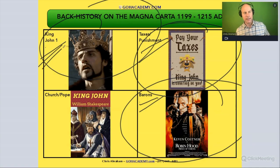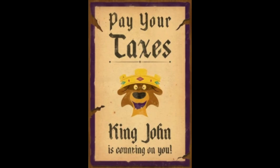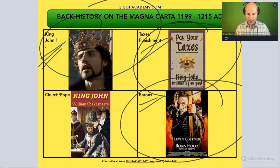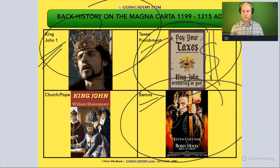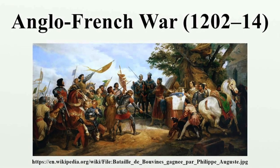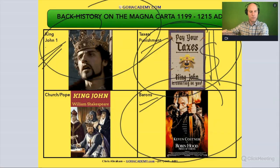Why was King John taxing everyone? Why was he taxing barons, knights, and landowners? Why was he punishing people who hunted in the royal woods? He was trying to raise money. There were the Crusades, battles with France — there were lots and lots of bills to pay.